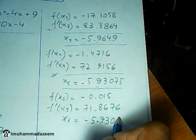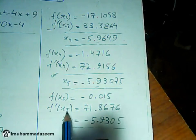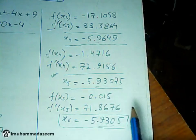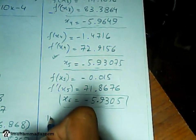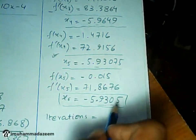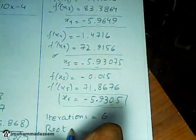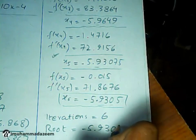Now the answer is converged to three decimal places. This is the root of the following polynomial. How many iterations we have done so far? Six iterations we have done. Iterations equals six, and the root is minus 5.9305. Thank you so much for watching.